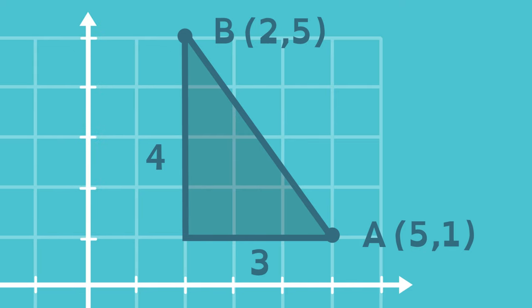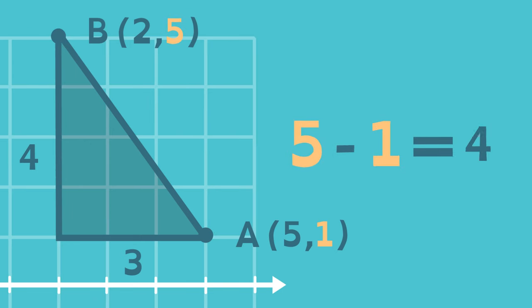For the vertical leg, take the y-distance of A and subtract the y-distance of B. This is equivalent to subtracting the y-coordinates of A and B.